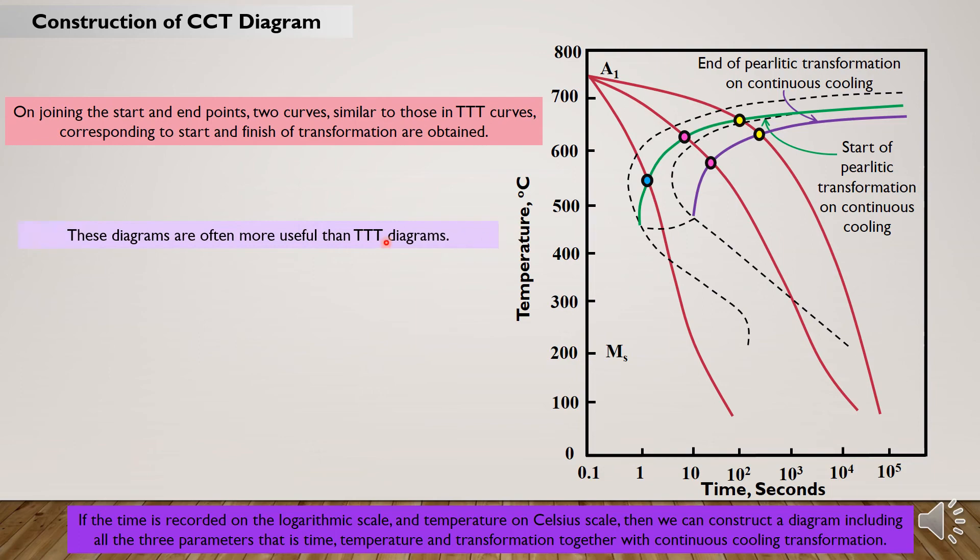These diagrams are often more useful than TTT diagrams because it is more convenient to cool materials at a certain cooling rate than to cool quickly and hold at a certain temperature as in isothermal cooling.